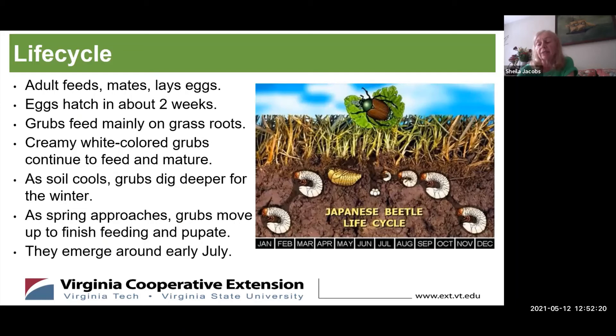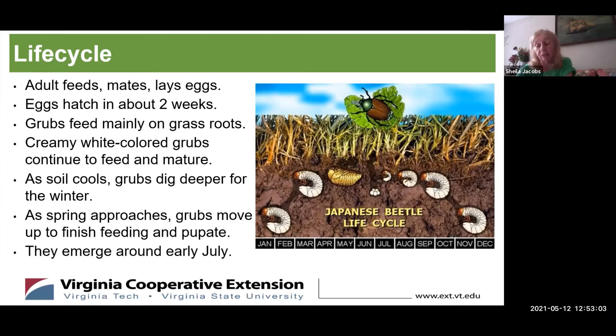This slide illustrates the life cycle of the Japanese beetle — they are underground for most of their life. The adult beetle emerges from the ground in late June or early July. The adult feeds, mates, and the female drops to the ground, burrows down a few inches, and lays her eggs — repeated several times for as many as 60 eggs total. In about two weeks, creamy white colored grubs hatch and continue to feed mostly on grass roots. By about November as the ground cools, the grubs dig deeper for the winter. In April they move up, finish feeding, and pupate in preparation for emerging from the ground, where the cycle repeats itself.